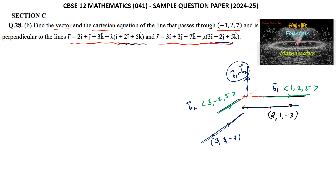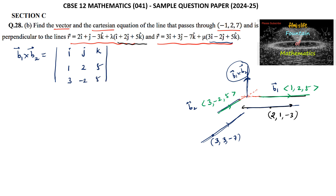Let us find B1 cross B2. We set up the determinant of I, J, K with B1 vector components 1, 2, 5 and B2 components 3, -2, 5. Upon simplifying, we get I times of (2×5 minus (-2)×5), that is (10 minus (-10)), which gives 20.